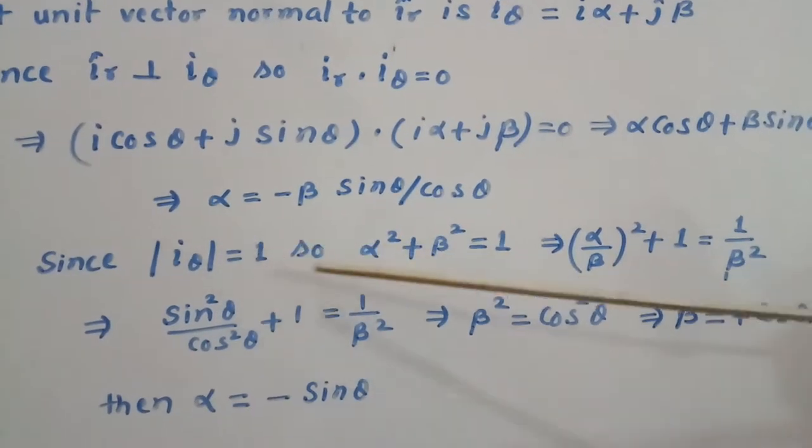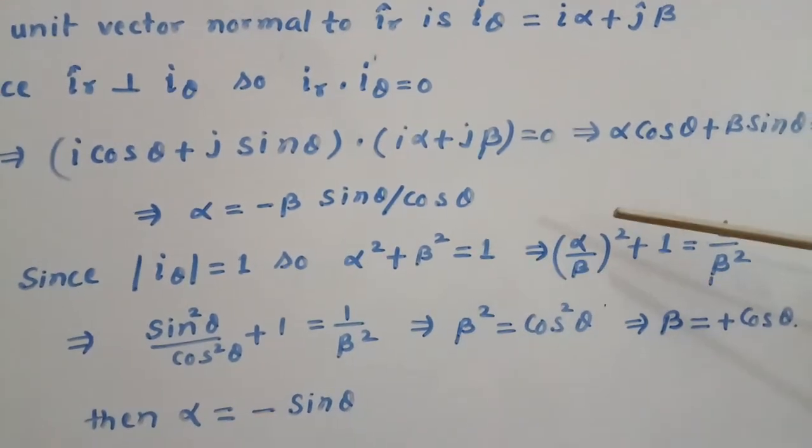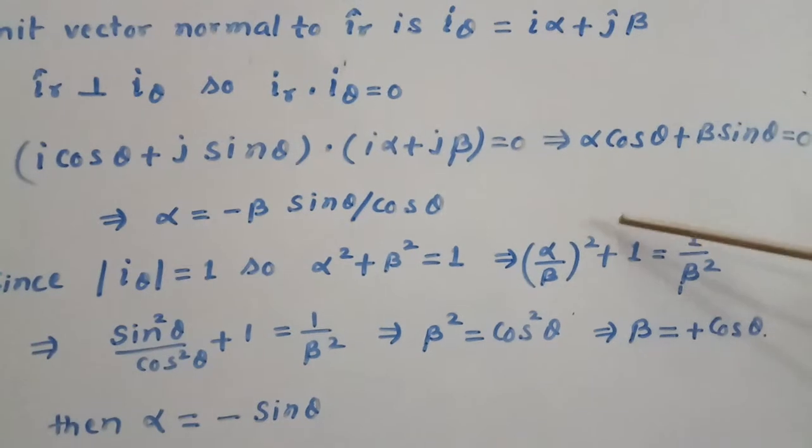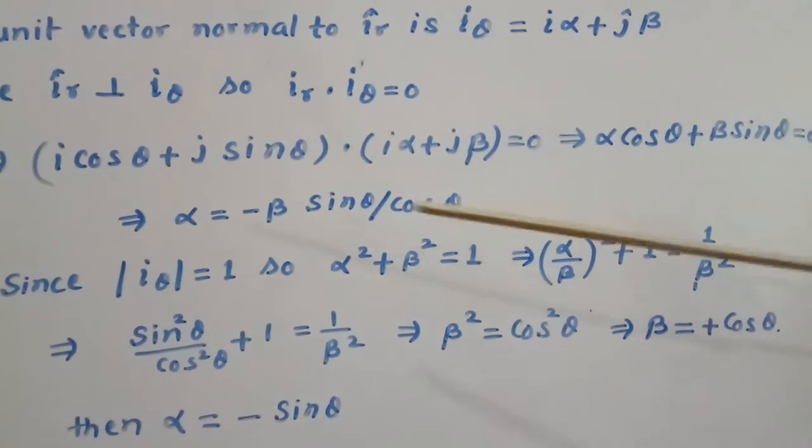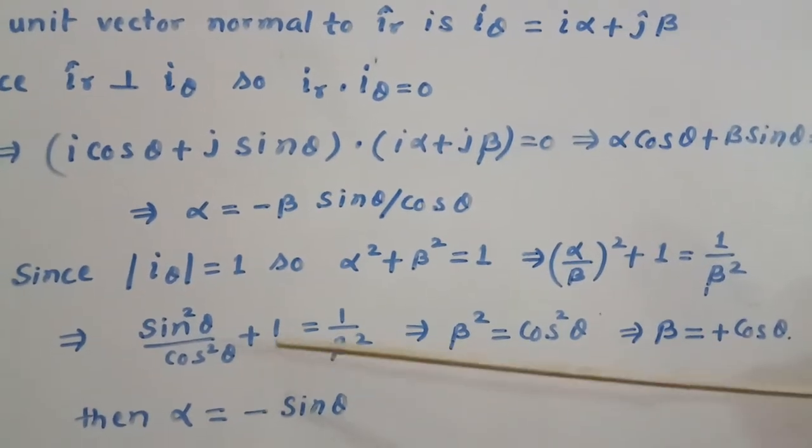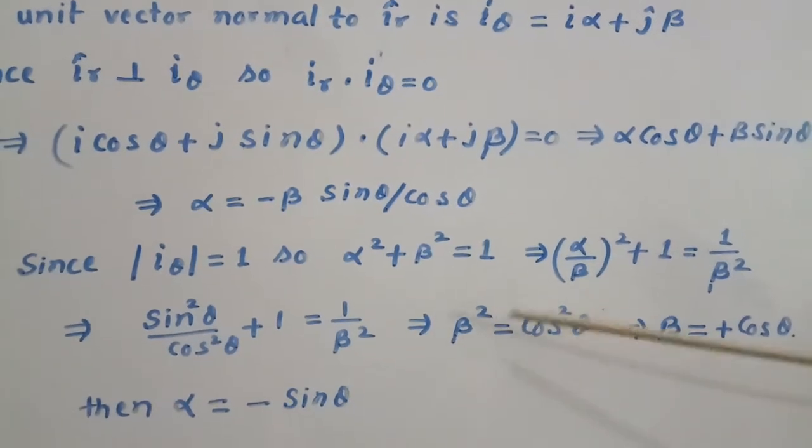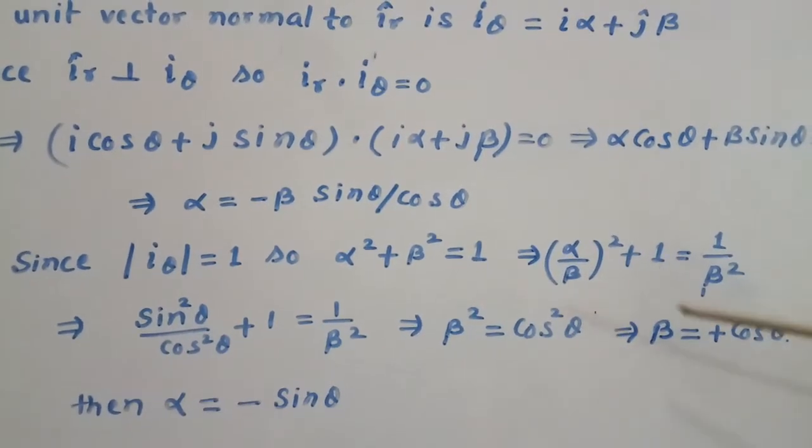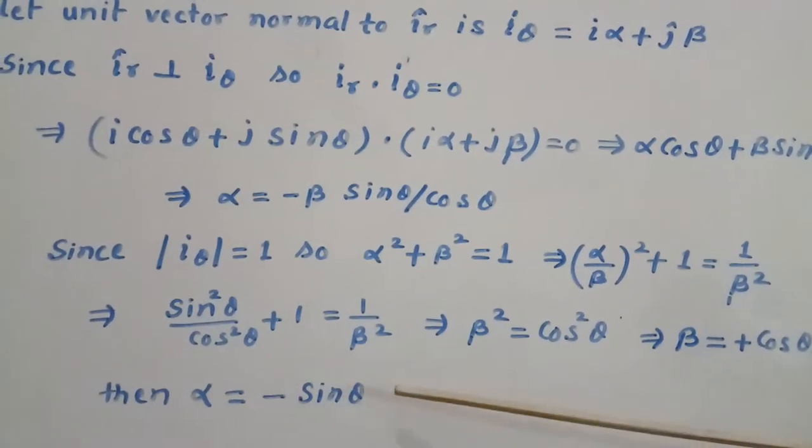Since modulus of i_theta is unity, we write alpha squared plus beta squared equals one, or alpha upon beta whole squared plus one equals one upon beta squared. We put the value of alpha upon beta from here. So we get sin squared theta divided by cos squared theta plus one equals one upon beta squared, or beta squared equals cos squared theta, or beta equals plus cos theta. Then alpha will be minus sin theta.